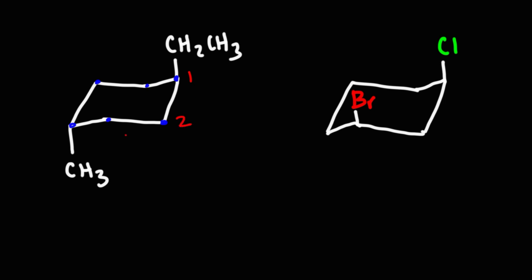So this is gonna be 1, 2, 3, 4. Now it's better to have the ethyl group on carbon 1 than the methyl group on carbon 1 because E comes before M, so we're gonna put it in alphabetical order. To name it, it's going to be 1-ethyl-4-methylcyclohexane. So that's the IUPAC nomenclature for this molecule.